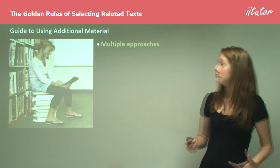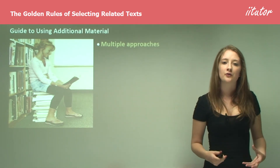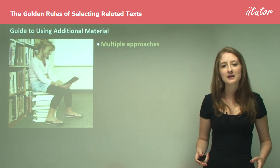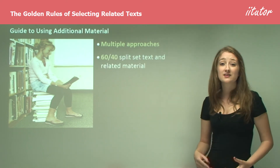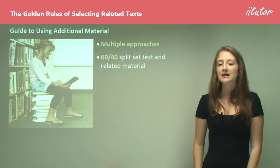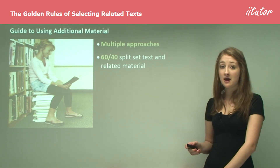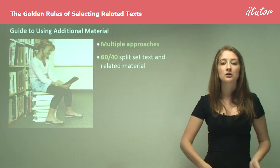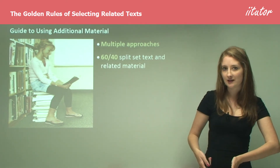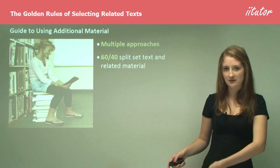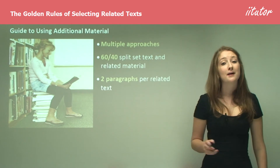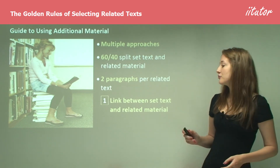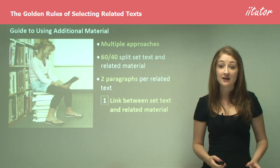This is your guide to using additional material. There are multiple approaches you can take to deal with what might seem like a daunting task in a really approachable way. Basically, what you want to achieve is a 60/40 split between your set text and your related material — spending 60 percent of your essay on your class text, 20 percent on your first related text, and 20 percent on your second related text. This means you'll probably have about two paragraphs for each related text.